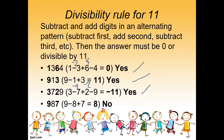Last example for rule 11: 987. 9 minus 8 equals 1, plus 7 equals 8. Since 8 is neither 0 nor 11, it is not divisible by 11.